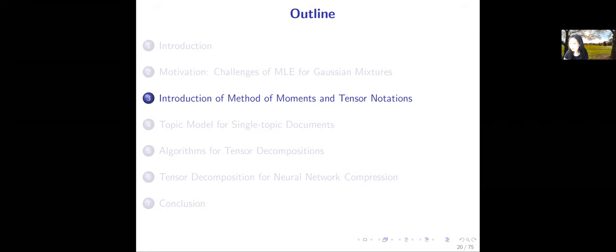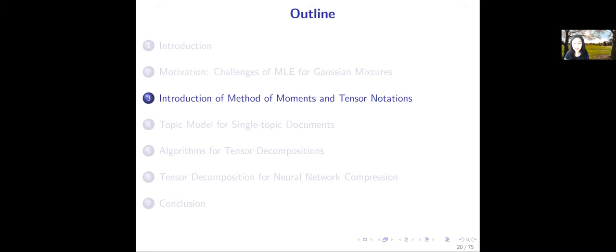We'll continue our discussion on latent variable models. Last time we did an introduction, motivated why latent variable models are useful, what they are, and how they connect to graphical models we learned before. We then motivated the challenges of maximum likelihood estimators for latent variable models, namely Gaussian mixtures. Now we're ready to introduce the method of moments. To understand it, we need to prepare ourselves with some tensor notations.